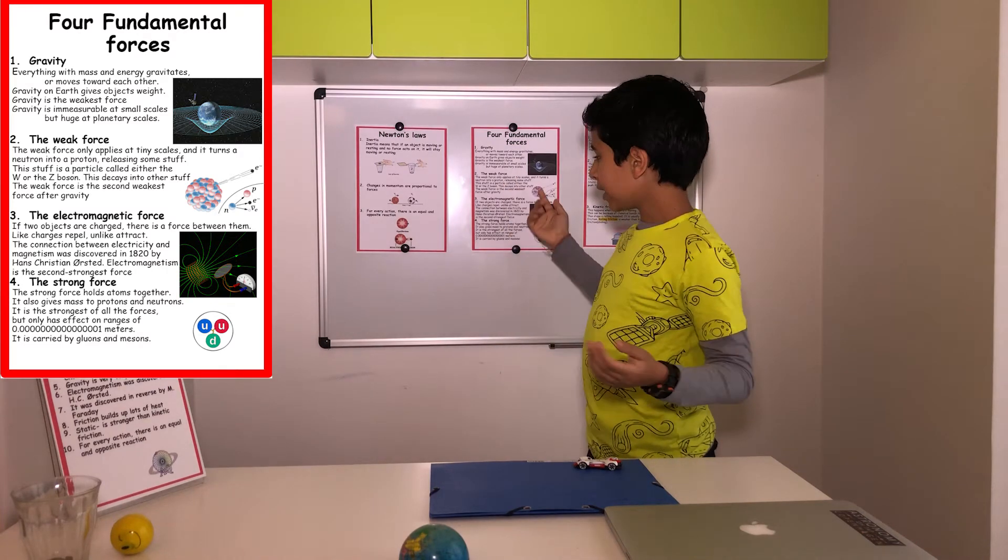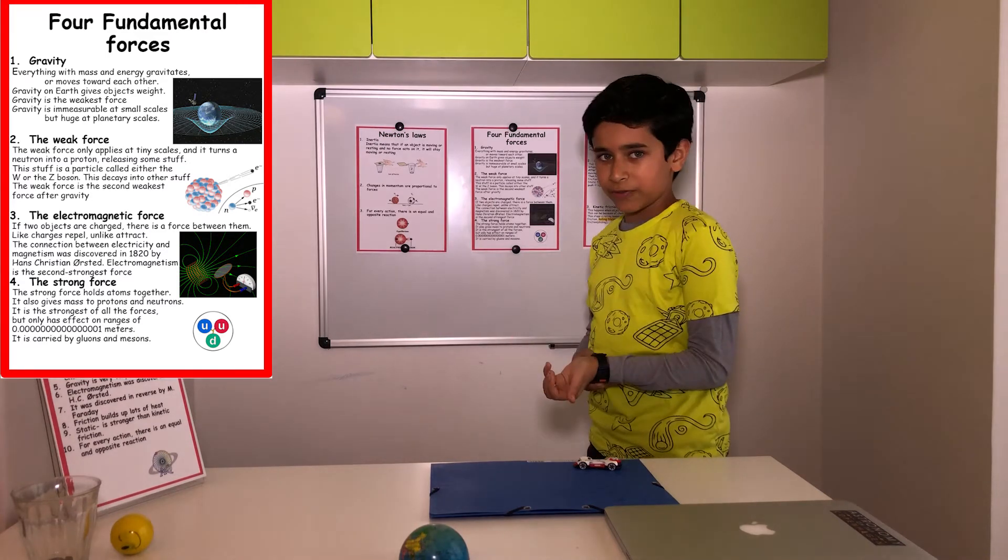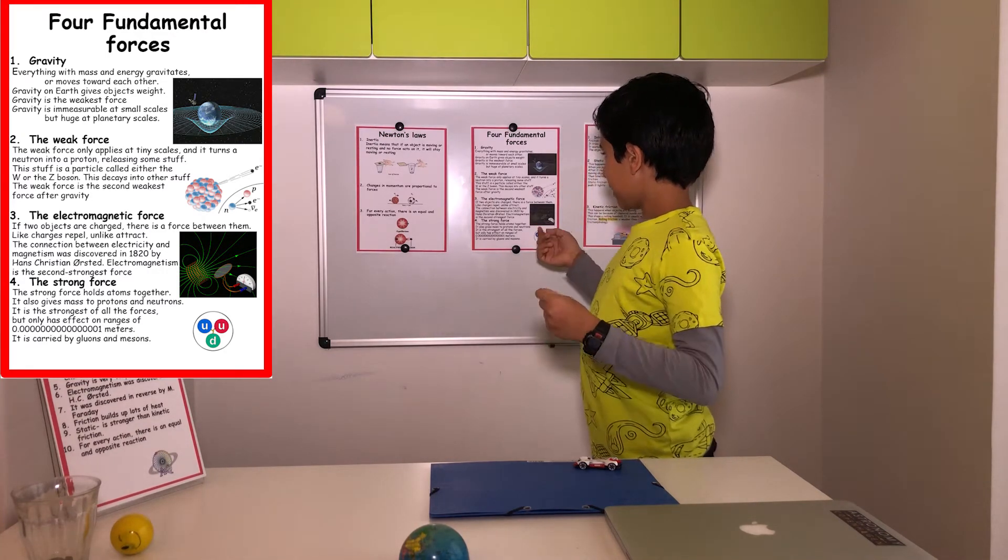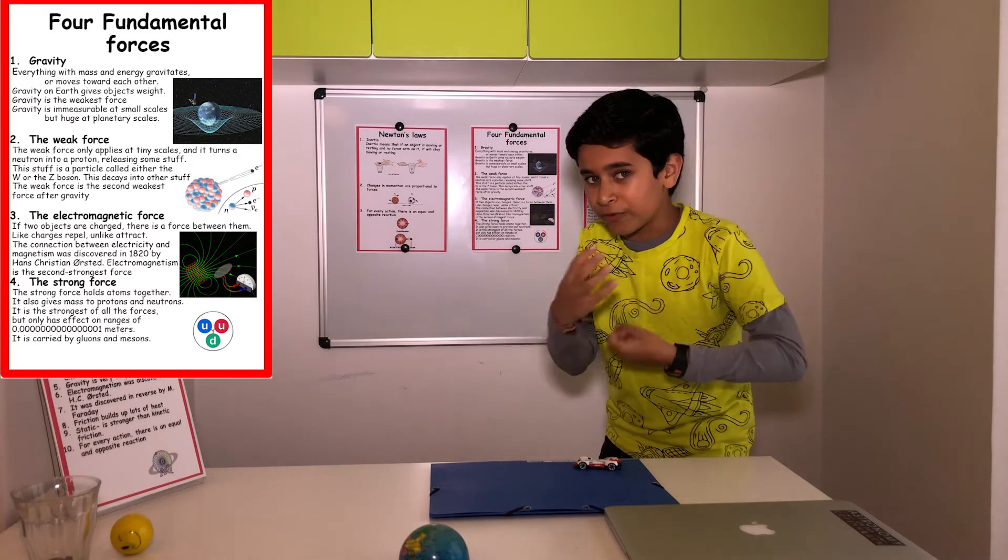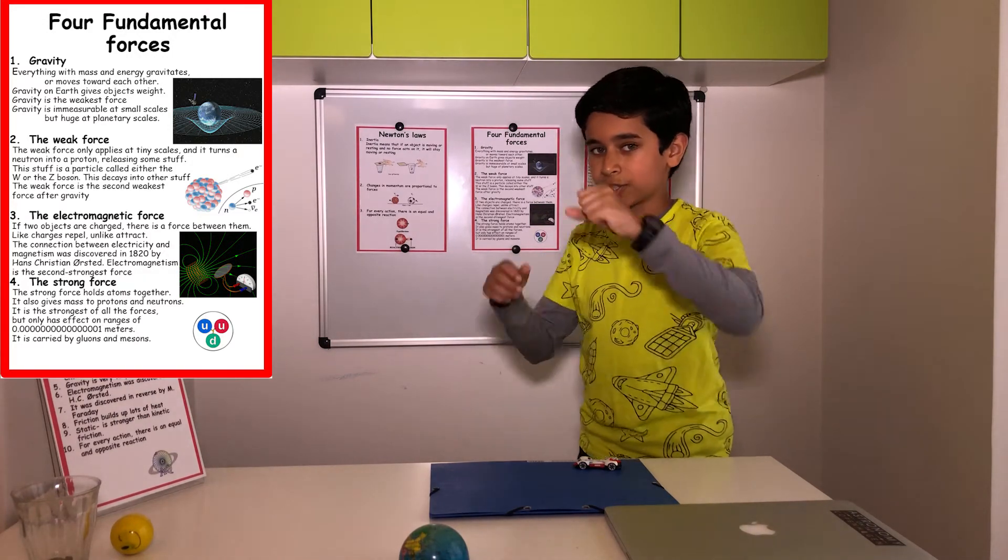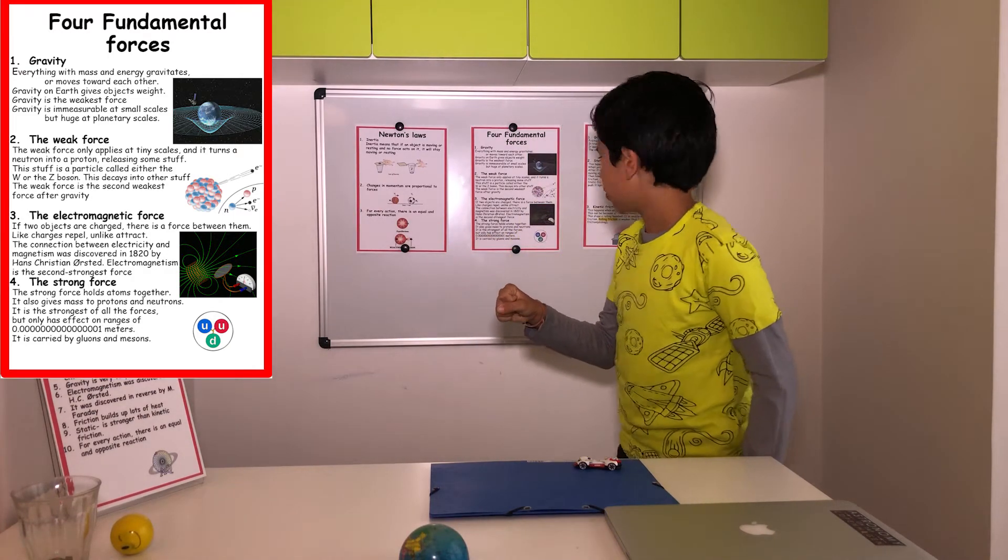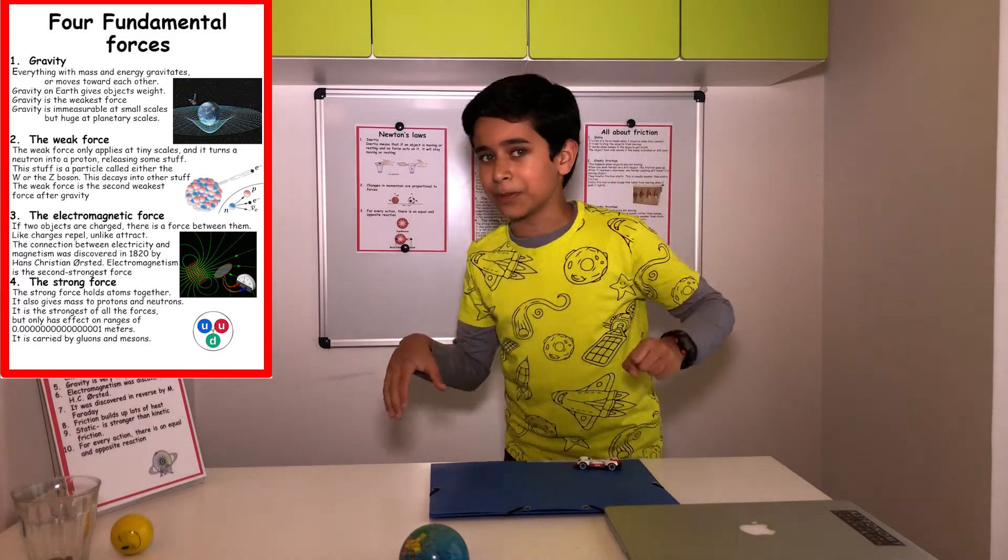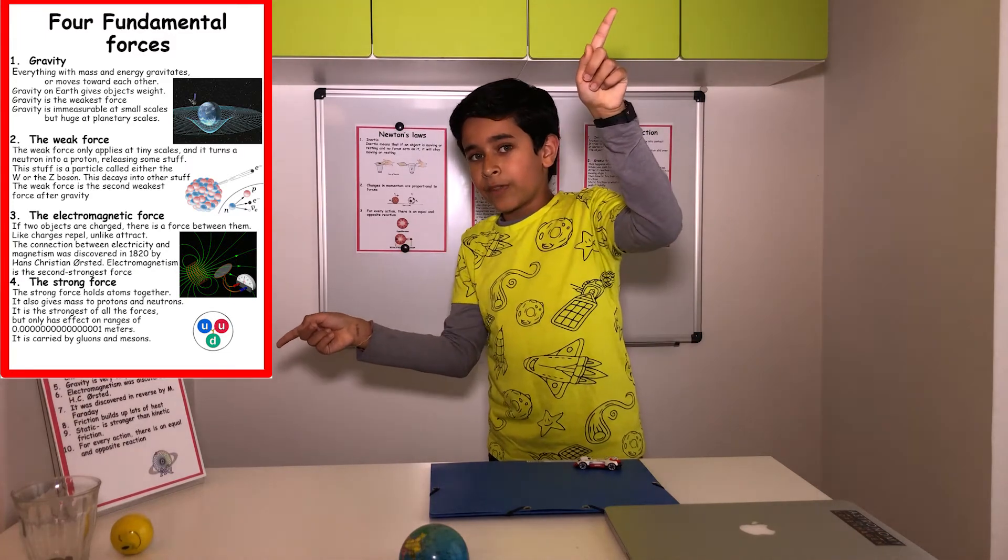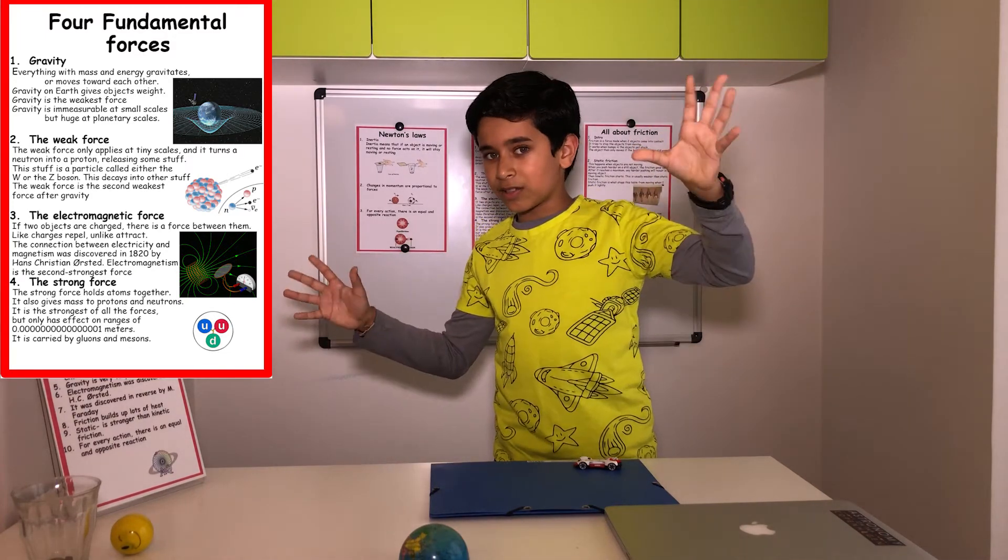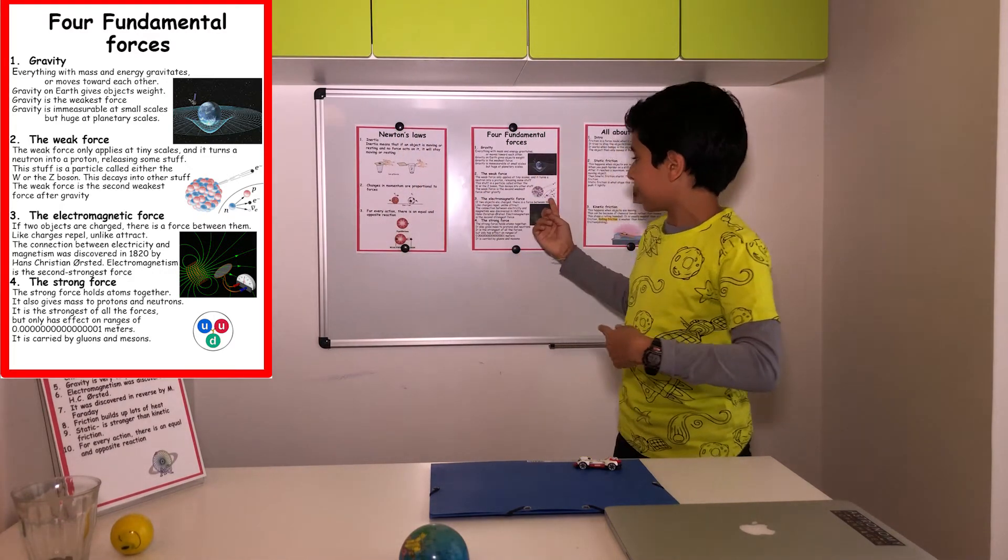Two, the weak force. The weak force only applies at really tiny scales. And it's the second weakest force after gravity. So basically, there's a particle called a proton. And then when the weak force happens, a weak interaction, it will turn into a heavier particle. Sorry, there's a neutron. It will turn into a lighter particle called a proton, releasing a W and a Z boson. And then this will decay into other stuff. So a neutron turns into a proton and some other really light stuff.